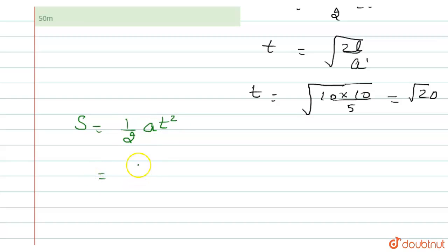Now we can substitute the values: 1/2 times 2 times t², where t² equals 20. So the distance equals 20 meters.